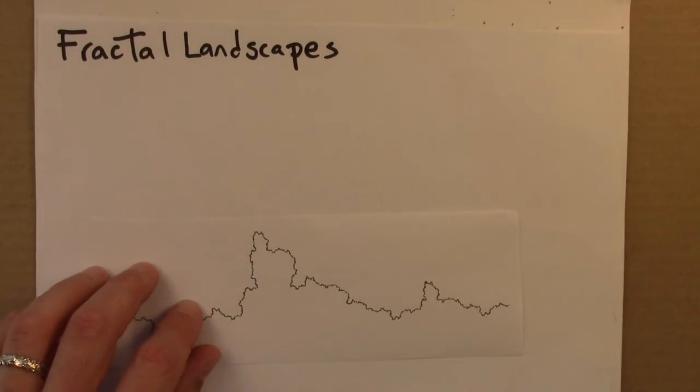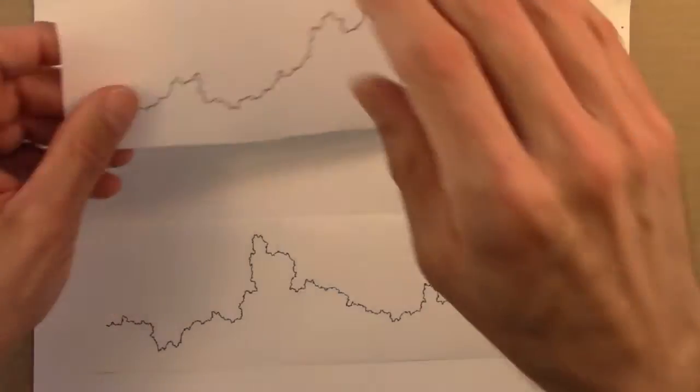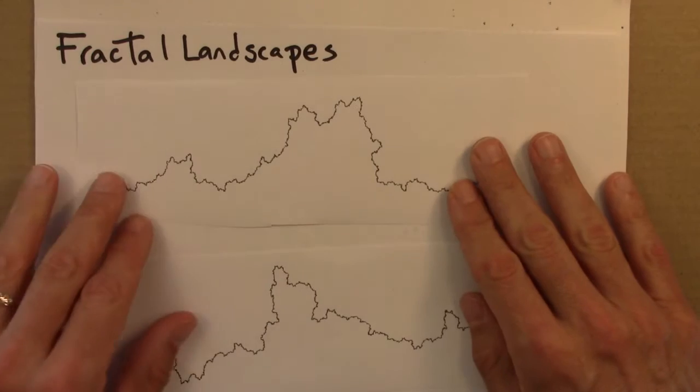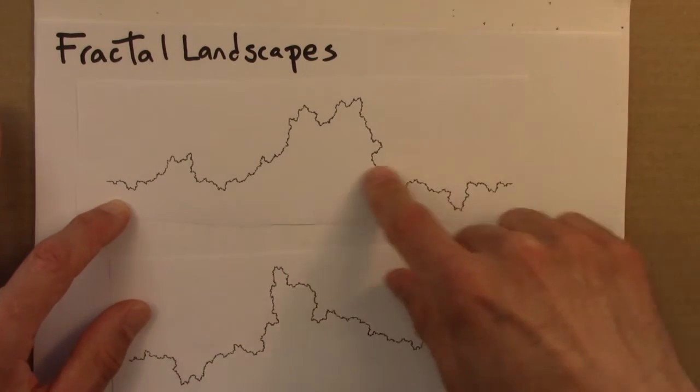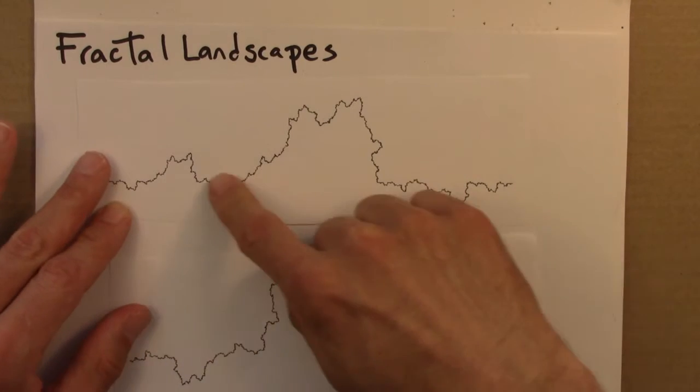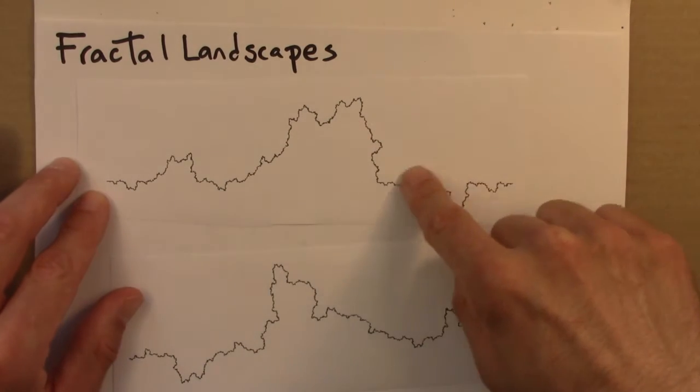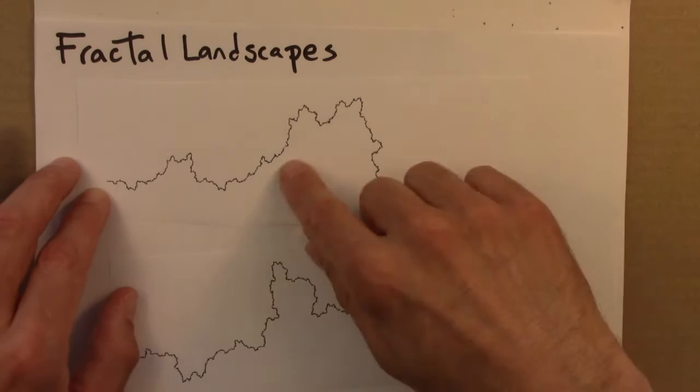So we've seen that adding randomness to our rule for generating the Koch curve yields these jagged shapes that look very much like perhaps a coastline or maybe a ridgetop, an outline that a bunch of mountains, a mountain range would make.